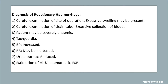The diagnosis of reactionary hemorrhage includes careful examination of the site of the operation and the drainage tube. The patient may be anemic with tachycardia. Blood pressure may be altered, respiratory rate may be increased, urinary output is reduced, and estimation of hemoglobin, hematocrit, and ESR can be done.